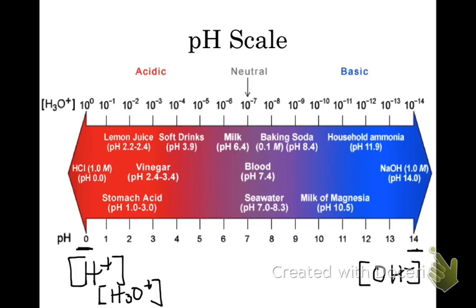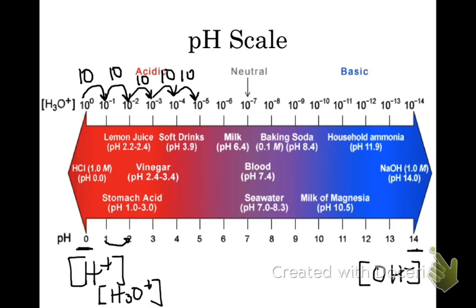The pH scale is a logarithmic scale. When we talk about logs, we can think about it as a factor of 10. Going from 0 to 14, we're decreasing the H₃O⁺ concentration by various factors of 10 and increasing the OH⁻ concentration by factors of 10. When we go from pH 0 to 1, we decrease the H₃O⁺ concentration by a factor of 10. From pH 1 to 2, we decrease it by another factor of 10, and so on.